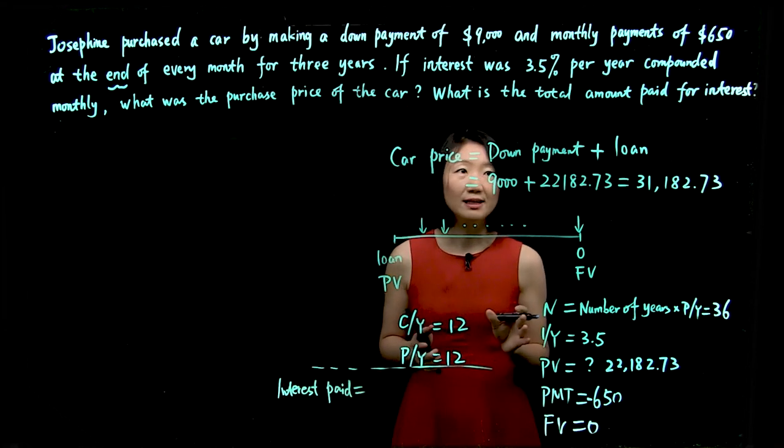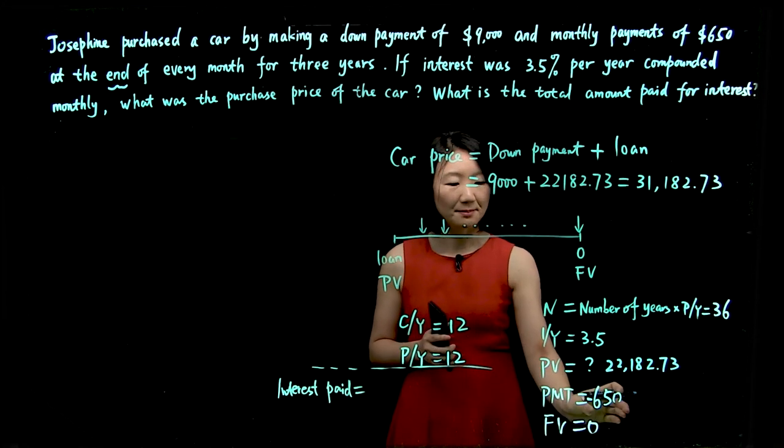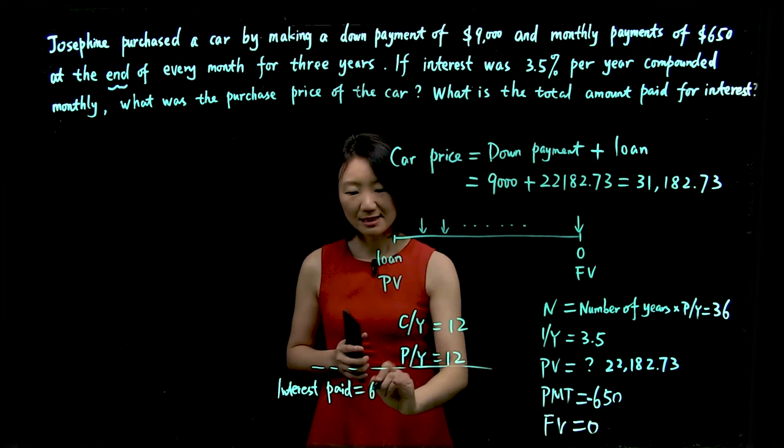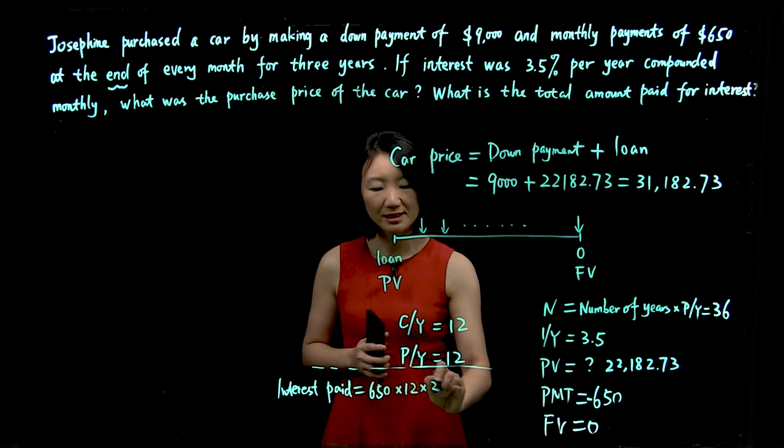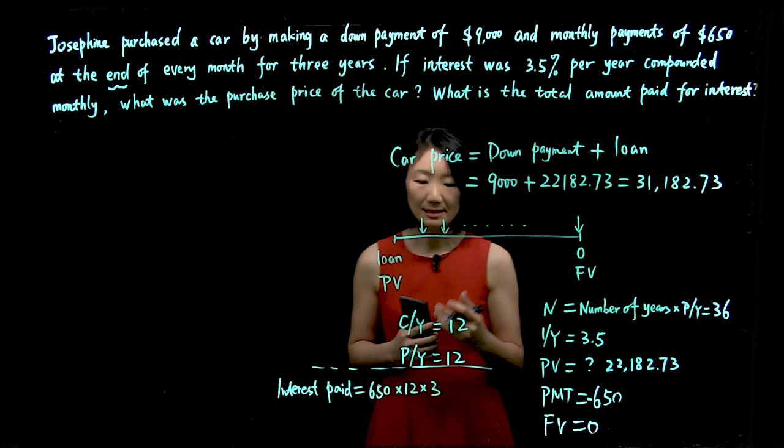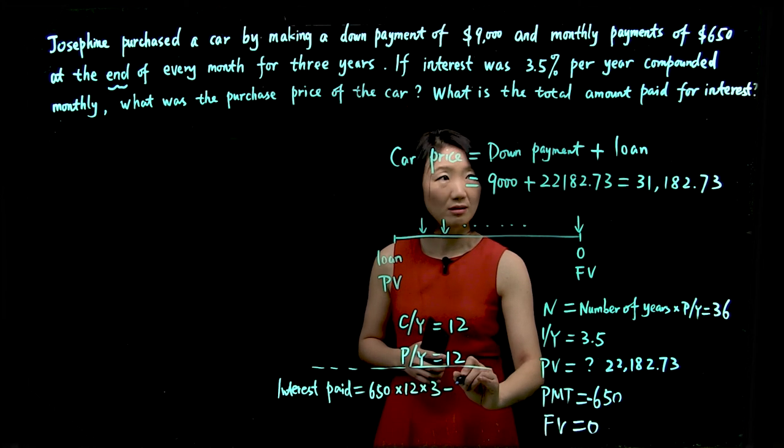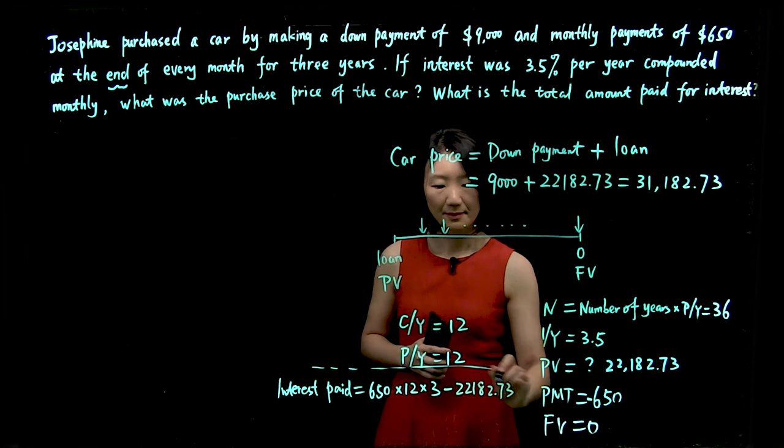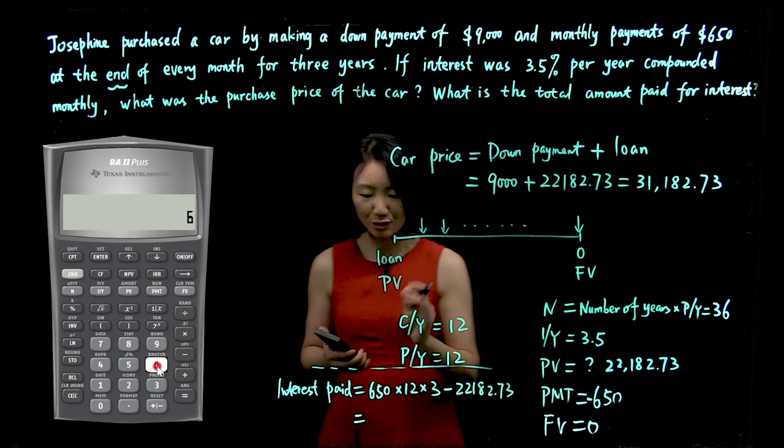For Josephine, in order to pay back this loan amount, she has to make monthly payments, $650. So we know $650 every month for three years. That's total payment Josephine made to use this payment to cover the loan. And that difference is the interest payment. Let's do the calculation.